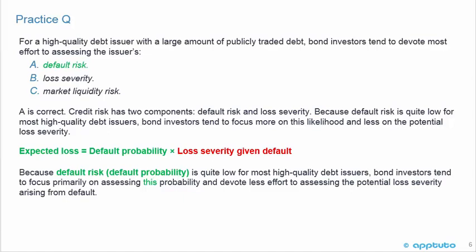Because default risk is quite low for most high-quality debt issuers, bond investors tend to focus more on this likelihood and less on the potential loss severity. Expected loss equals the default probability times the loss severity given default. Note that default risk and default probability refer to the same thing — be careful with the language there. Bond investors tend to focus primarily on assessing this probability and devote less effort to assessing the potential loss severity.